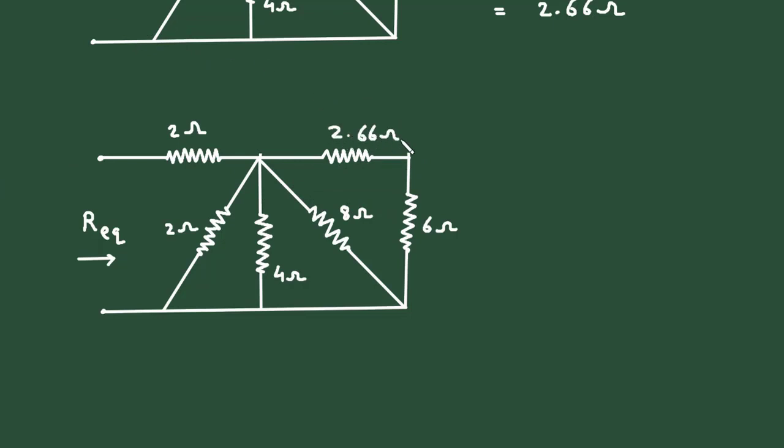2.66 ohm. Now this 2.66 ohm and 6 ohm, these are connected in series. So these two are connected in series, so it will become 2.66 plus 6, so it will be 8.66 ohm. This 8.66 ohm is in parallel with this 8 ohm, 4 ohm, and 2 ohm. So all of these are connected in parallel.